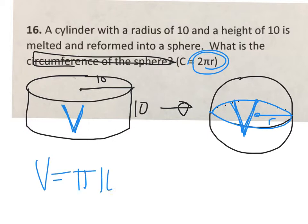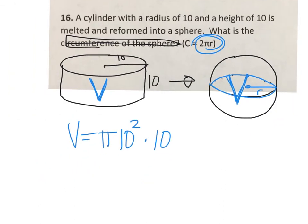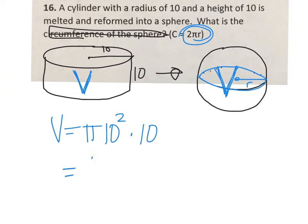which is π times radius squared times the height, that gives me a volume of 1,000π cubic units, since there are no units.